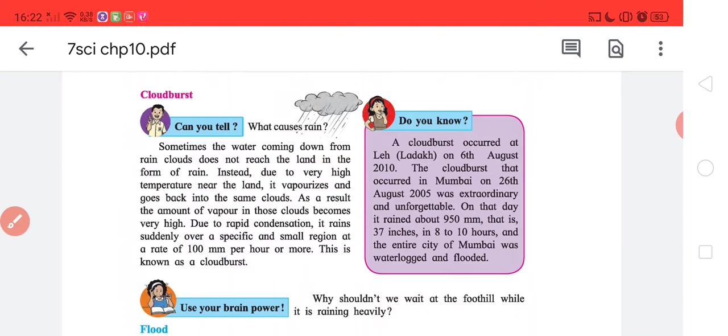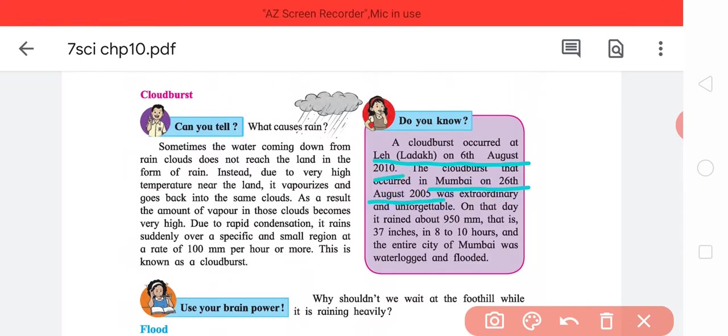This is known as cloud burst. The examples given here are Ladakh on 6th August 2010 and Mumbai on 26th July 2005. Both are explaining cloud burst cases. On that day it rained about 950 mm, that is 35 inches in 8 to 10 hours. Just to give you an idea, from where I come from, that is Delhi, it rains approximately 75 millimeters in three months. So now you have an idea about how much is the cloud burst, it's 950 millimeters.